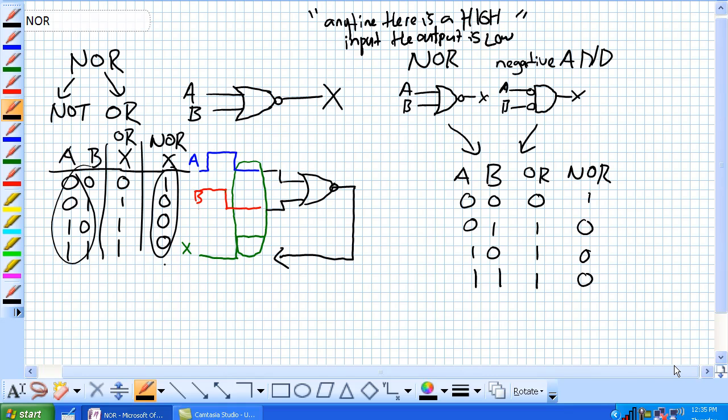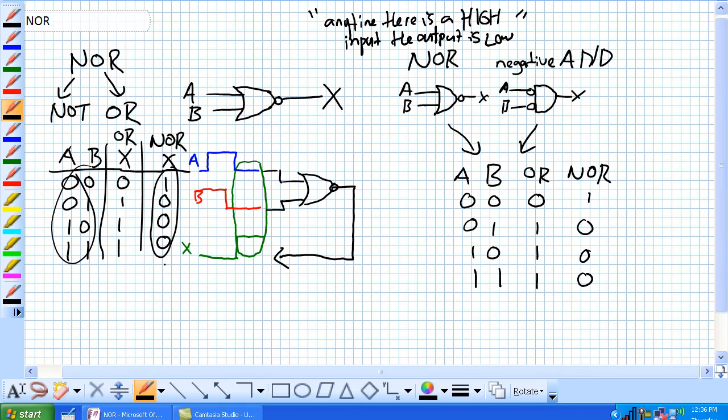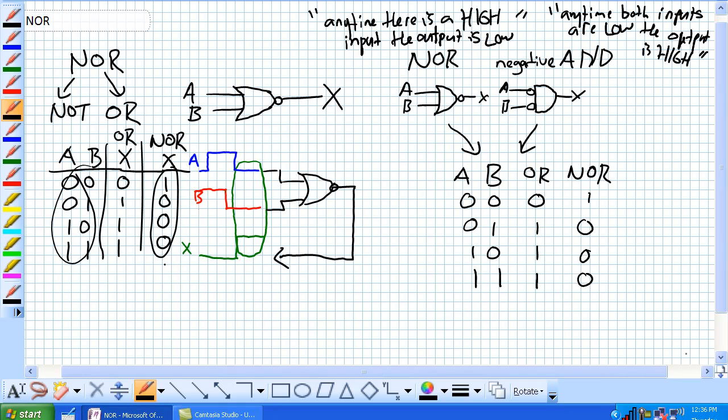So what is a negative AND, what is the verbiage for that? Well, the negative AND can be written this way. Any time both inputs are low, key is both, both inputs are low, the output is high. So for a negative AND, any time both inputs are low, the output is high. There you go, that's a negative AND.